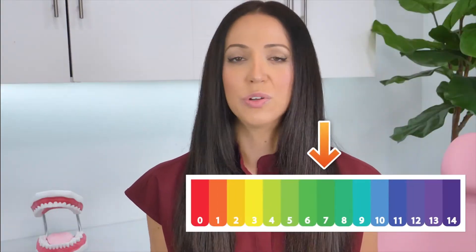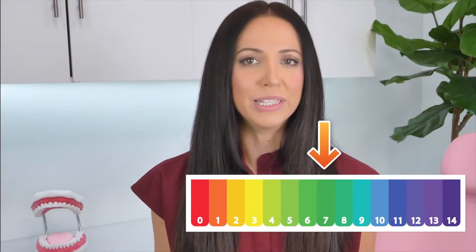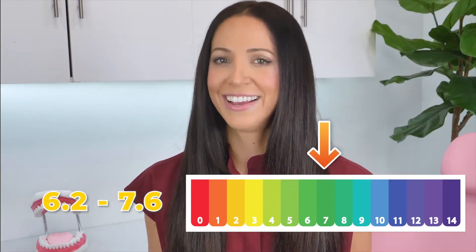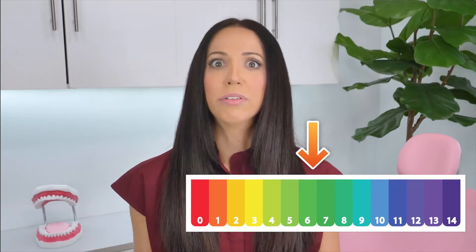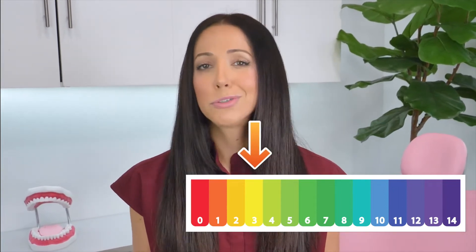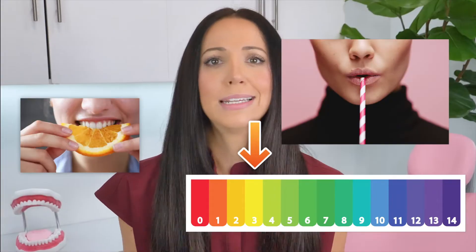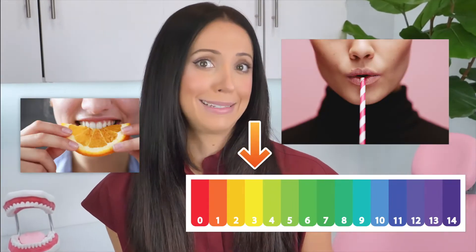So first things first, the pH levels in your mouth should be neutral, which is around pH level seven, or specifically between 6.2 and 7.6. A healthy mouth is a neutral mouth, not acidic. We want a neutral mouth, we don't want an acidic mouth. And the big issue, regardless of whether your mouth is naturally neutral or naturally acidic, is that most foods and drinks tend to be more on the acidic side. So when we consume these acidic foods and drinks, it temporarily increases acid levels in our mouth. And of course, it's worse if you tend to have a naturally acidic mouth to begin with.